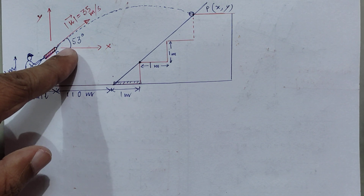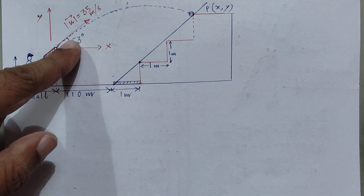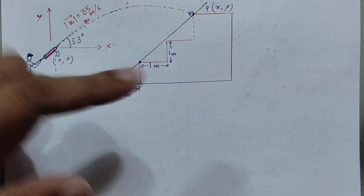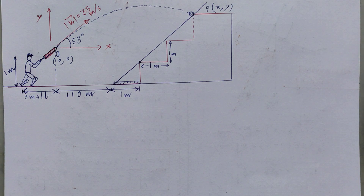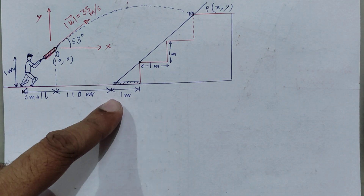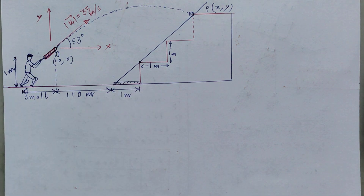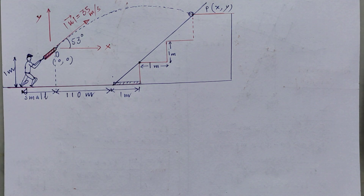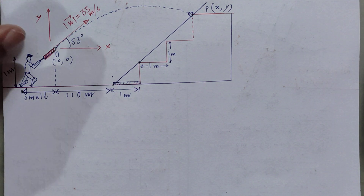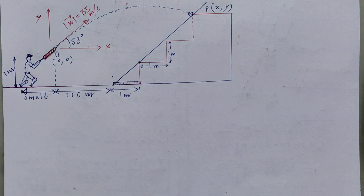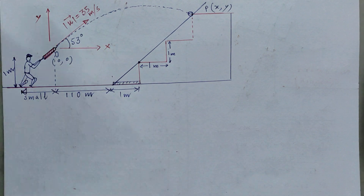The ball is an obliquely fired projectile, so it follows a parabolic trajectory and hits one of the steps of the gallery. The steps of the gallery are one meter long and one meter wide. The question is: where does this ball hit on the gallery — on which step does this ball land after striking the gallery?